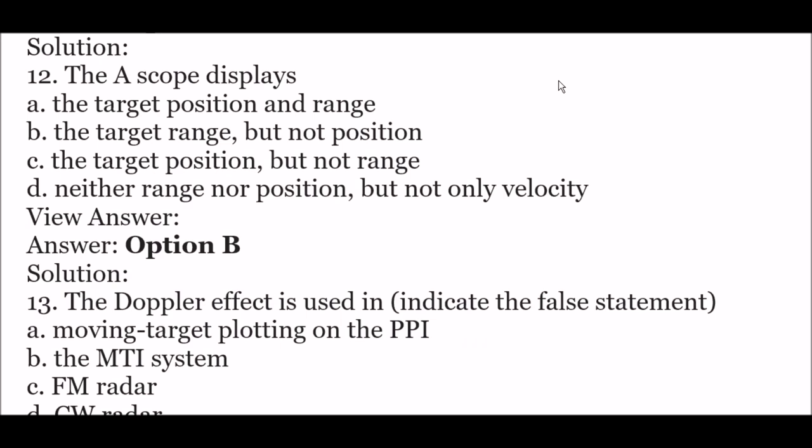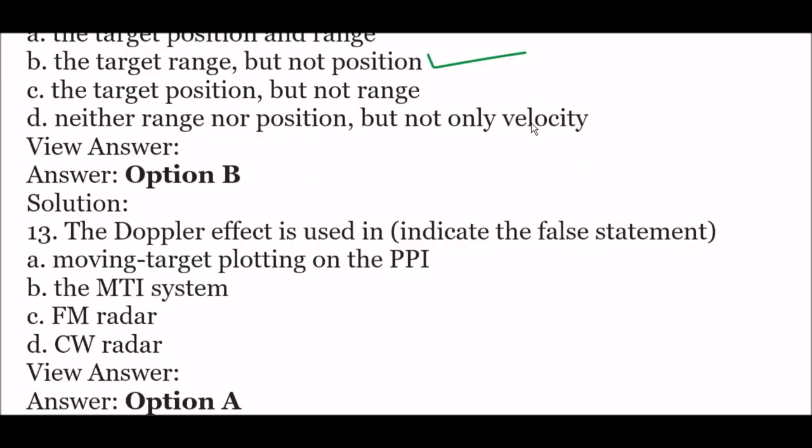Next question: the A-scope displays — option A: the target position and range, option B: the target range but not position, option C: the target position but not range, option D: neither range nor position, only velocity. The right answer is option B — the A-scope displays the target range but not the position.